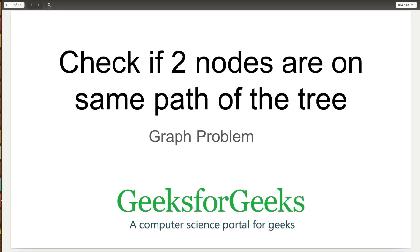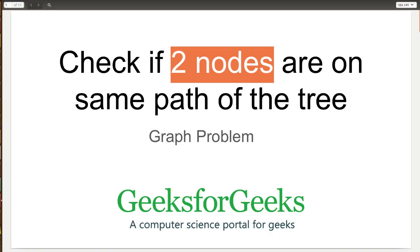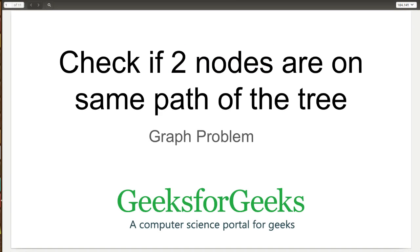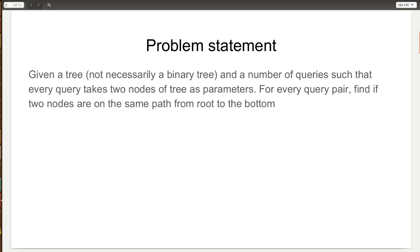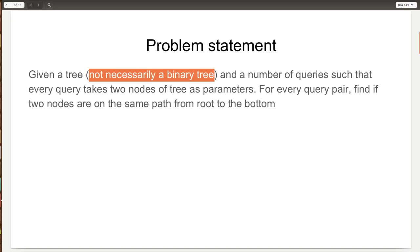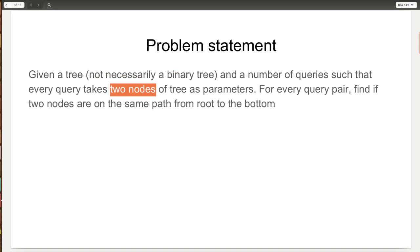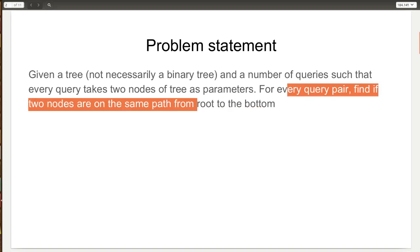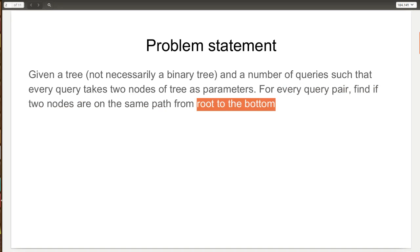Hi guys and welcome to GeeksforGeeks. Today we are going to discuss the problem to find whether two given nodes are on the same path of the tree or not. The problem statement says that given a tree which is not necessarily a binary tree and a number of queries, such that each query takes two nodes of the tree as parameters, we have to find whether those two nodes are on the same path from root to bottom or not.